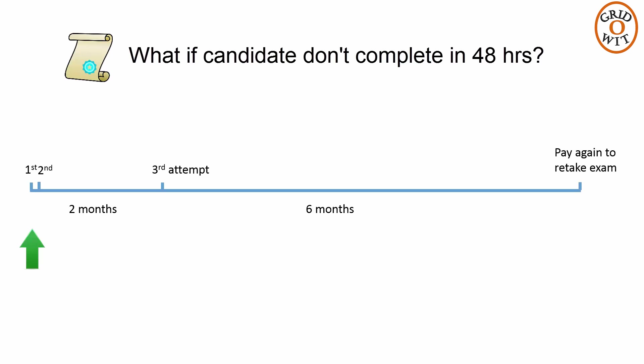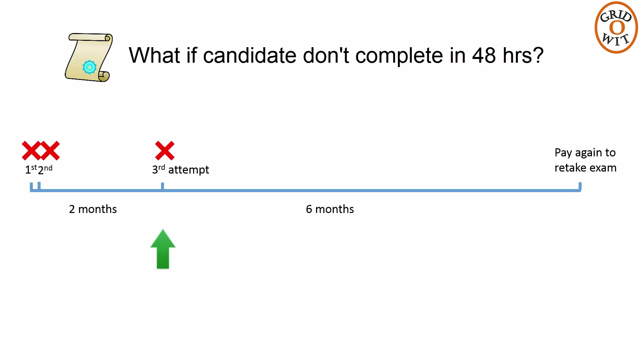If a candidate does not pass their first attempt, they may immediately retake the exam. If they do not pass their second attempt, they will be eligible for a third attempt after a two-month waiting period. If after the third attempt the candidate has still not passed, they must wait six months. After six months, if the candidate still wishes to take the exam, they must pay for it again.